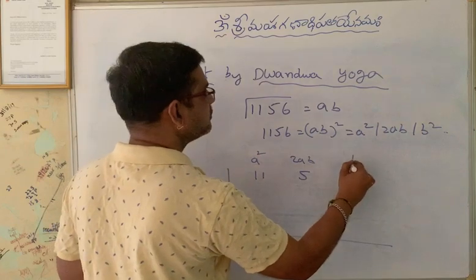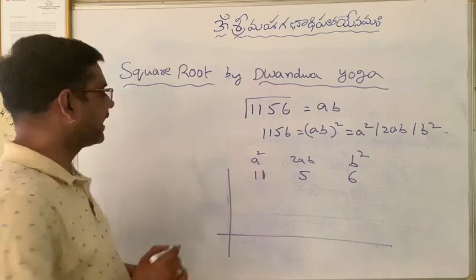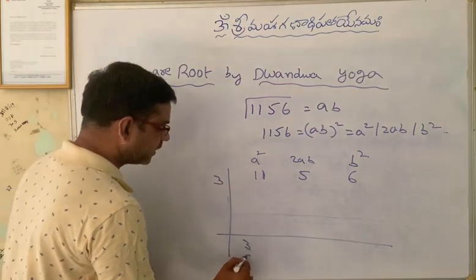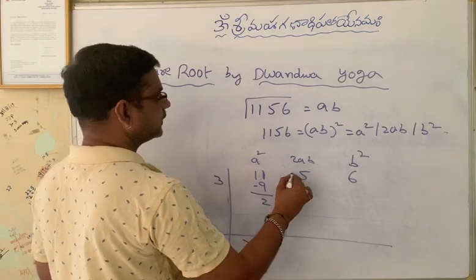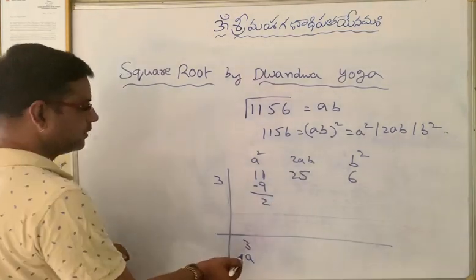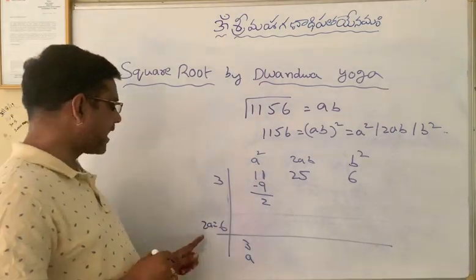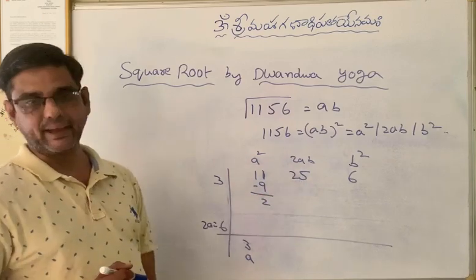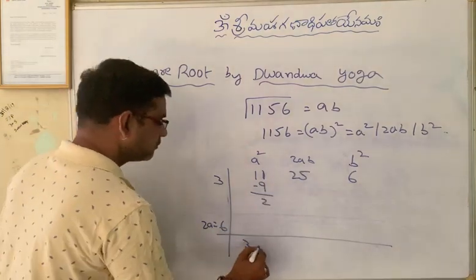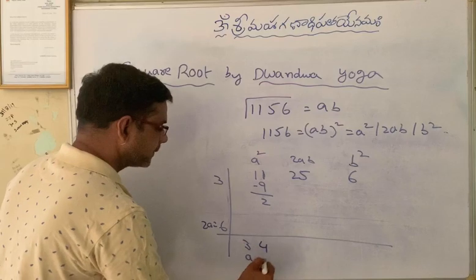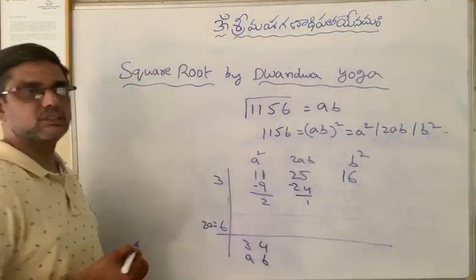This is the A square term, 2AB term, and B square term. We know 11 is not a perfect square, and the nearest perfect square less than 11 is 9 — so A is 3. Carry the remaining 2 to near 5, so it becomes 25. Now A is 3 and 2A is 6. With 2A equal to 6 and 2AB equal to 25, B is 4, since 6 fours are 24 and the remaining 1 carries forward, making B square equal to 16.